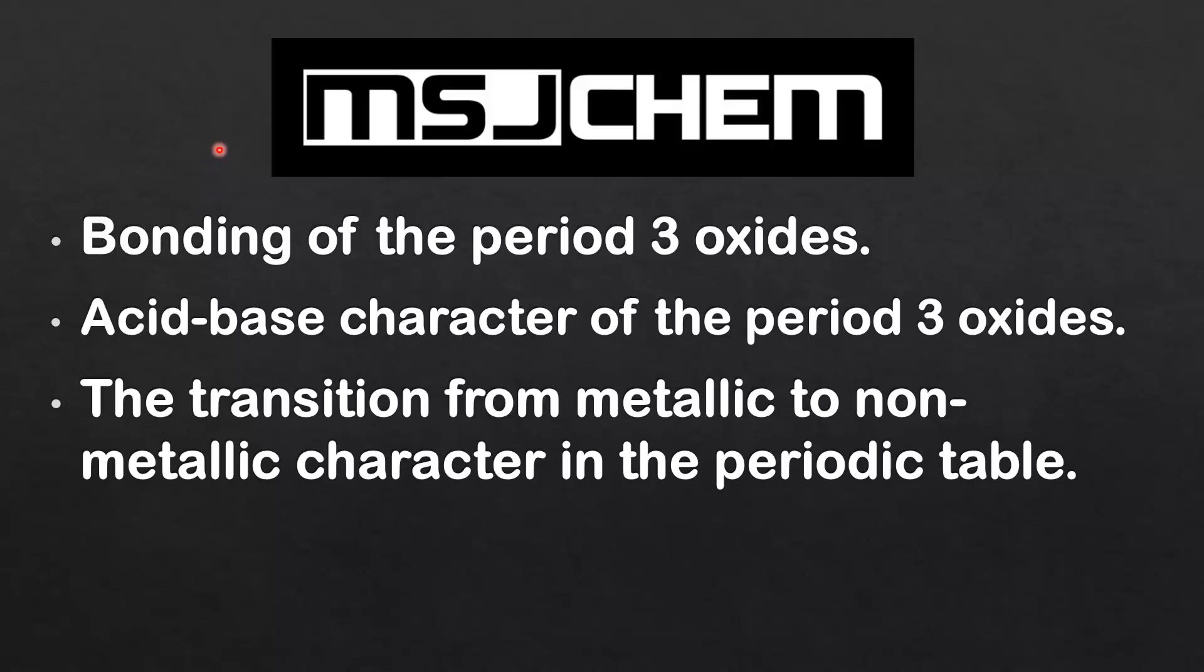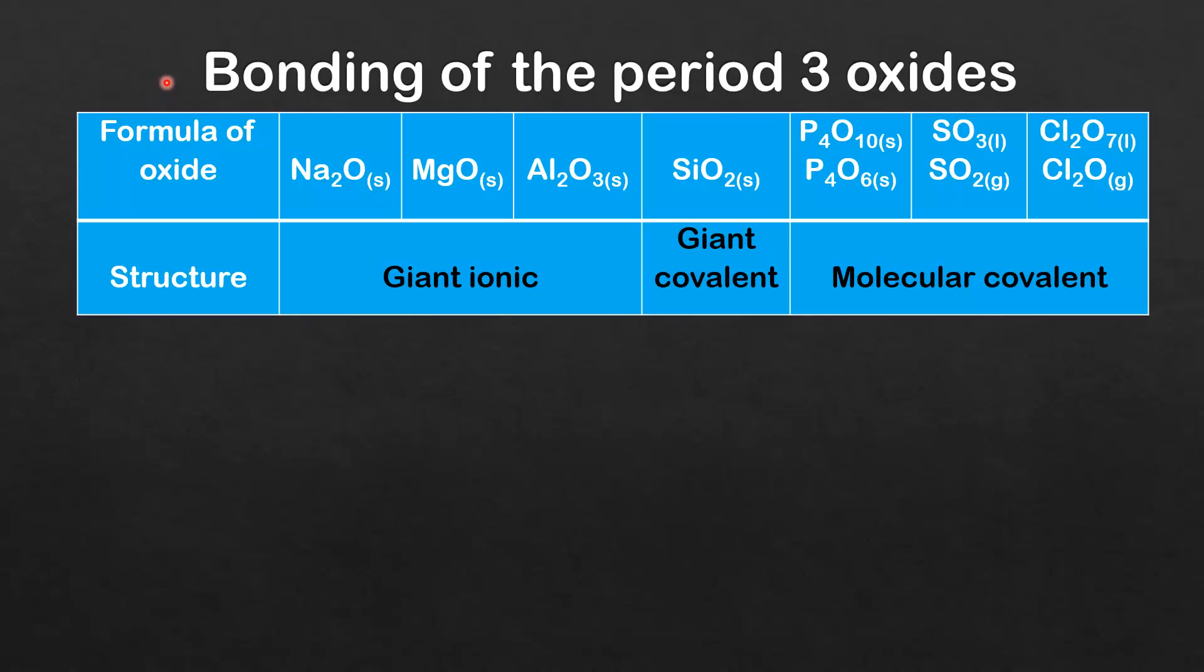This is MSJChem and in this video I'm going to look at bonding of the period 3 oxides, acid base character of the period 3 oxides, and the transition from metallic to non-metallic character in the periodic table.